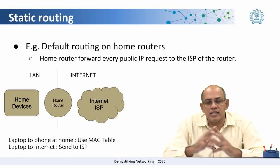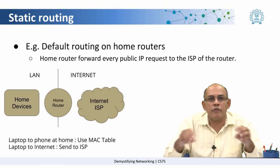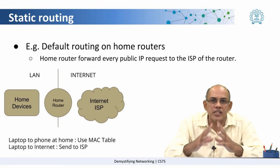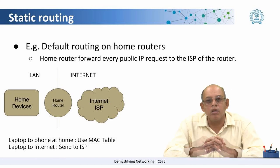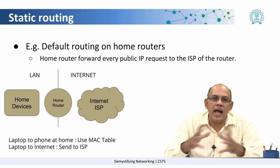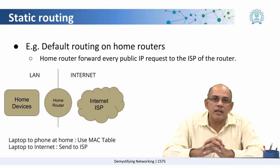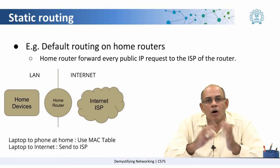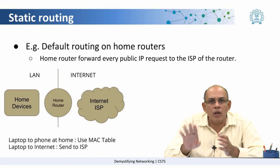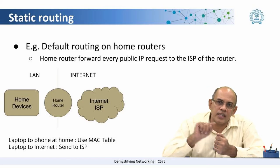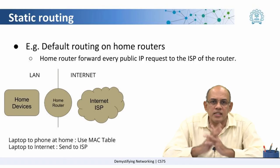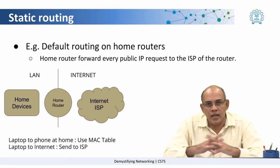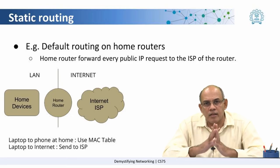Irrespective of the number of devices in your home — laptops and mobile phones all connecting to the same Wi-Fi home router — on the inner side, in the LAN, it uses MAC addresses to send packets to individual devices. On the internet side, all it does is send all packets to that single static route, or to that single ISP's router to which it is connected. This is the simplest example of a static route, and in the case of a home network, a static route is sufficient.